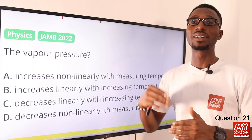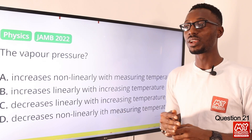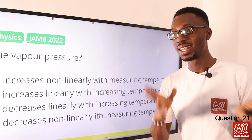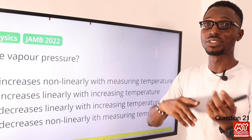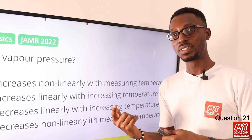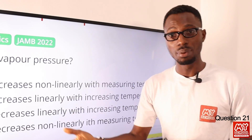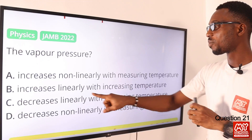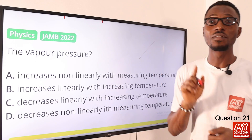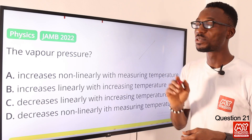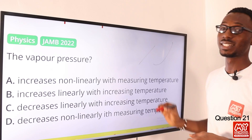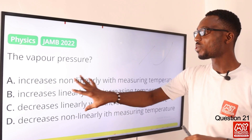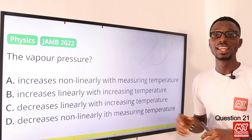We should know that vapor pressure increases as temperature increases. For instance, when we are trying to boil some water, as the temperature of the water rises, we realize that a lot of vapor gases have been formed — they are trying to escape, that's where you see steam coming out of the water. So as you increase temperature, the vapor pressure increases. However, this increase is not linear — meaning it's not a straight line graph. It is curved. So the correct option is vapor pressure increases non-linearly with increasing temperature. Option A is the correct option.